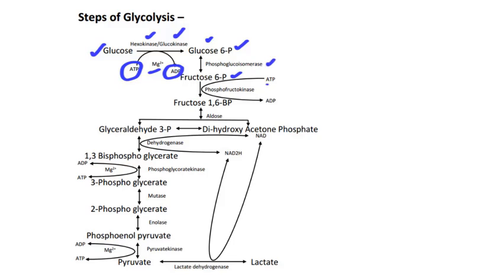Next, breaking ATP into ADP and inorganic phosphate, fructose-6-phosphate produces fructose-1,6-bisphosphate in the presence of phosphofructokinase. Then, glyceraldehyde-3-phosphate and dihydroxyacetone phosphate are produced from fructose-1,6-bisphosphate in the presence of aldolase enzyme. With the presence of dehydrogenase enzyme, glyceraldehyde-3-phosphate produces 1,3-bisphosphoglycerate.